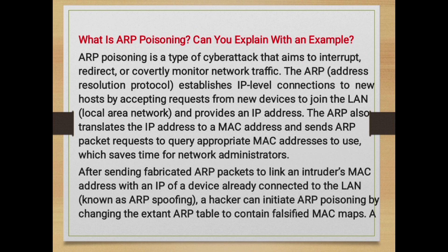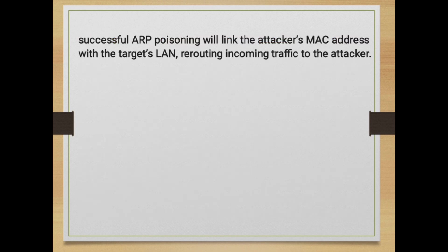What is ARP poisoning? ARP poisoning is a type of cyber attack that aims to interrupt, redirect, or covertly monitor network traffic. The ARP establishes IP-level connections to a new host by accepting requests from a new device to join the LAN and provides an IP address; it also translates the IP address to a MAC address and sends ARP packet requests to query appropriate MAC addresses. After sending fabricated ARP packets to link an intruder's MAC address with the IP of a device already connected to a LAN, a hacker can initiate ARP poisoning by changing the existing ARP table to contain falsified MAC maps. A successful ARP poisoning links the attacker's MAC address with the target's LAN, rerouting incoming traffic to the attacker.